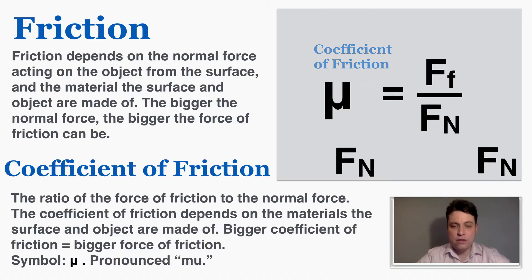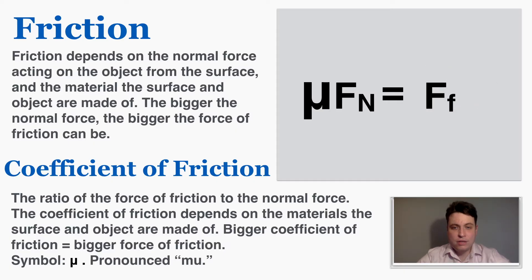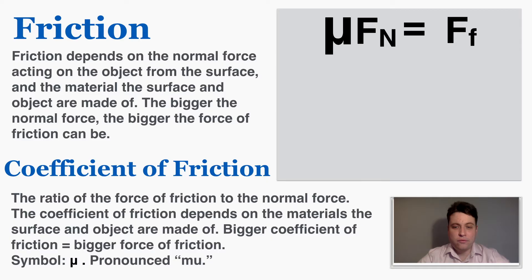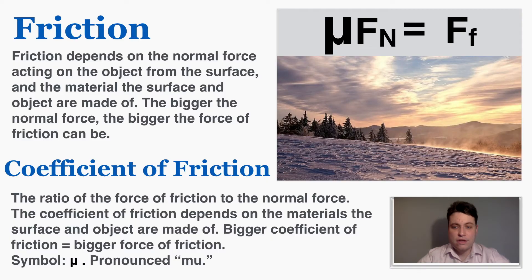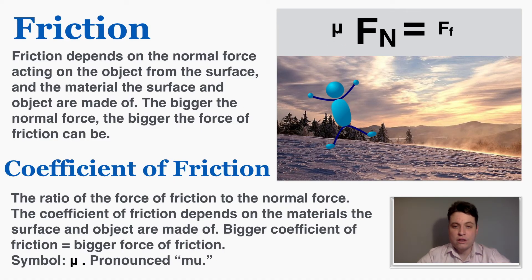Rearranging the equation gives us: the coefficient times the normal force equals the force of friction. Since the normal force between an object and surface doesn't necessarily change, if the coefficient is very small, the force of friction is going to be very small. For example, a person standing on snow or ice has a very low coefficient of friction, so any sideways force will have a pretty easy time accelerating that person.